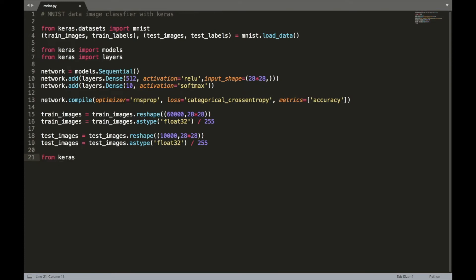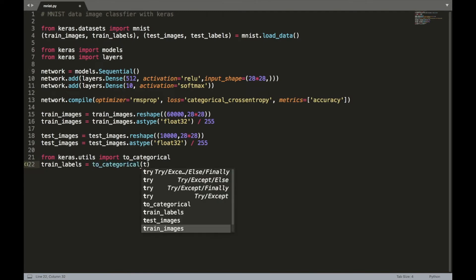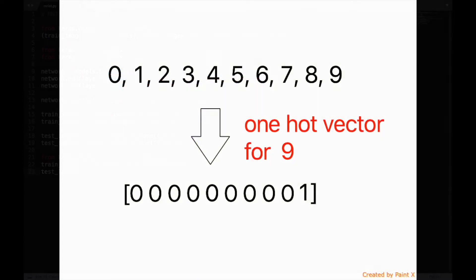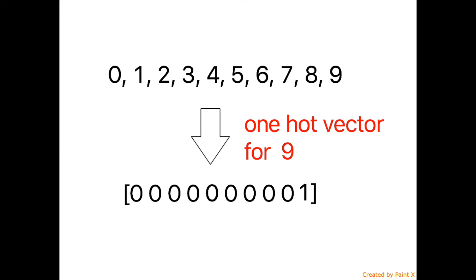The next step is to create a one-hot vector of the output labels. Consider the 10 different classes corresponding to each digit. A one-hot vector representation for a given class is a vector whose dimension is equal to the number of classes, in this case 10.